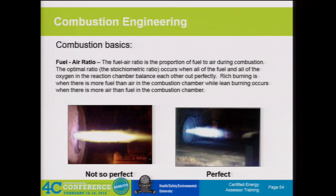By looking at the flame, in general these long orangish flames are an indicator of poor performance—the air-to-fuel ratio is off and we're not getting the most efficient combustion setup. As the boiler air is adjusted, we're able to find a sweet spot where we get that blue-green type of flame pattern. That's what is the ideal situation from a visual standpoint to get a feel for whether we're getting close to having a more efficient combustion process.